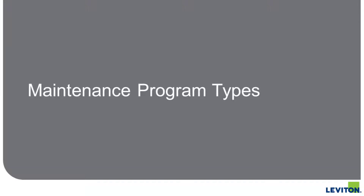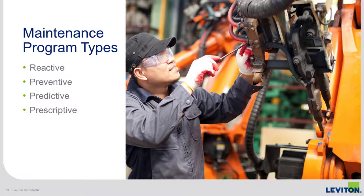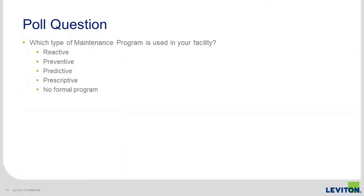Now we're going to talk about the different types of maintenance programs that people employ in industry. Those types are reactive, preventive, predictive, and prescriptive. Before we move on, we're ready for our first poll question. What we'd like to know is what type of maintenance program is being used in your facility today? Are you using reactive, preventive, predictive, or prescriptive? Do you not have a program, or are you just unsure? If you're unsure, put in no formal program. If you use more than one, just pick the one that's most preferential.